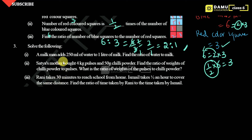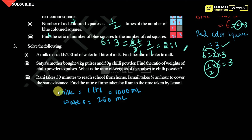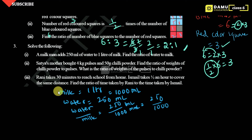Next problem: A milkman adds 250 ml of water to 1 liter of milk. 1 liter equals 1000 ml. Find the ratio of water to milk. Water is 250 ml, milk is 1000 ml. So 250 by 1000 — cancelling zeros gives 25 by 100, simplifying: 1 by 4. That is 1 is to 4. That is the ratio of water to milk.